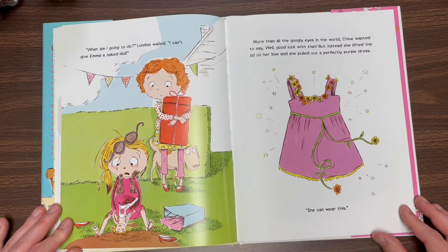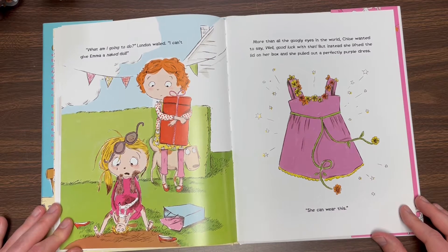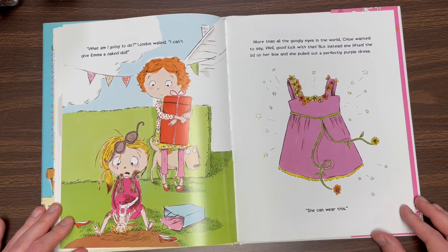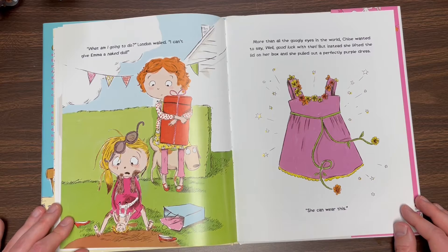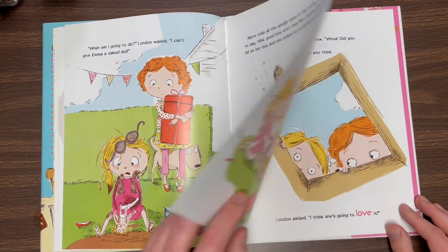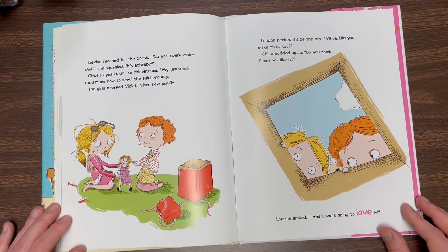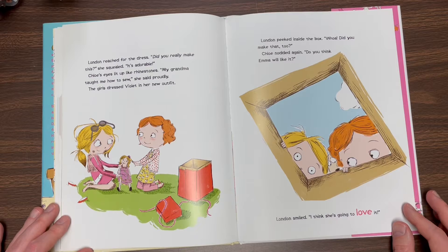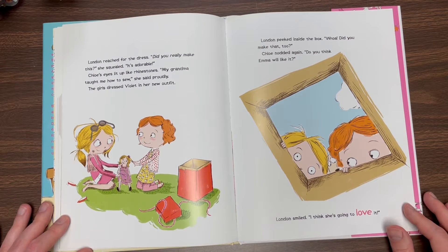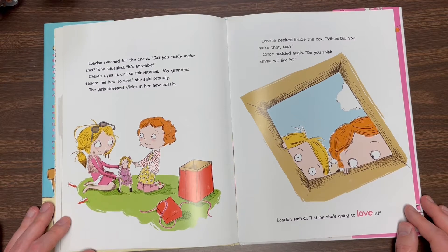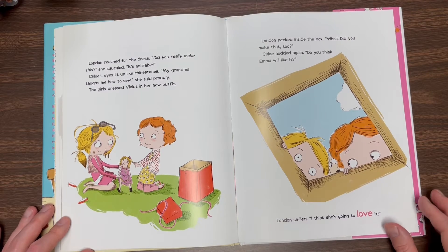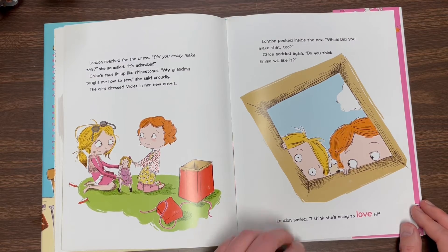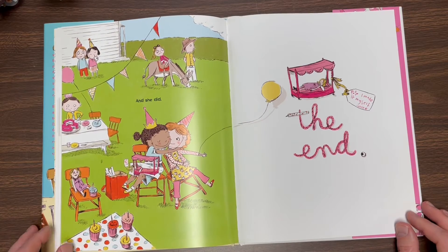What am I going to do? London wailed. I can't give Emma a naked doll. More than all the googly eyes in the world, Chloe wanted to say, well, good luck with that. But instead, she lifted the lid on her box and she pulled out a perfectly purple dress. She can wear this. London reached for the dress. Did you really make this? She squealed. It's adorable. Chloe's eyes lit up like rhinestones. My grandma taught me how to sew, she said proudly. The girls dressed Violet in her new outfit. London peeked inside the box. Whoa, did you make that, too? Chloe nodded again. Do you think Emma will like it? London smiled. I think she's going to love it. And she did. The end.